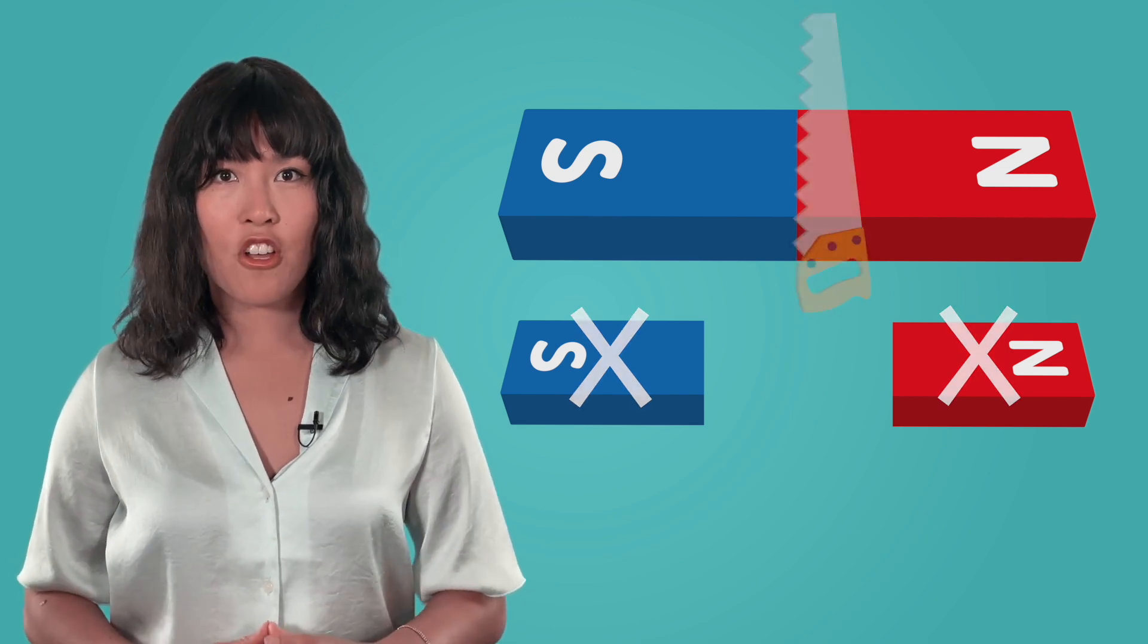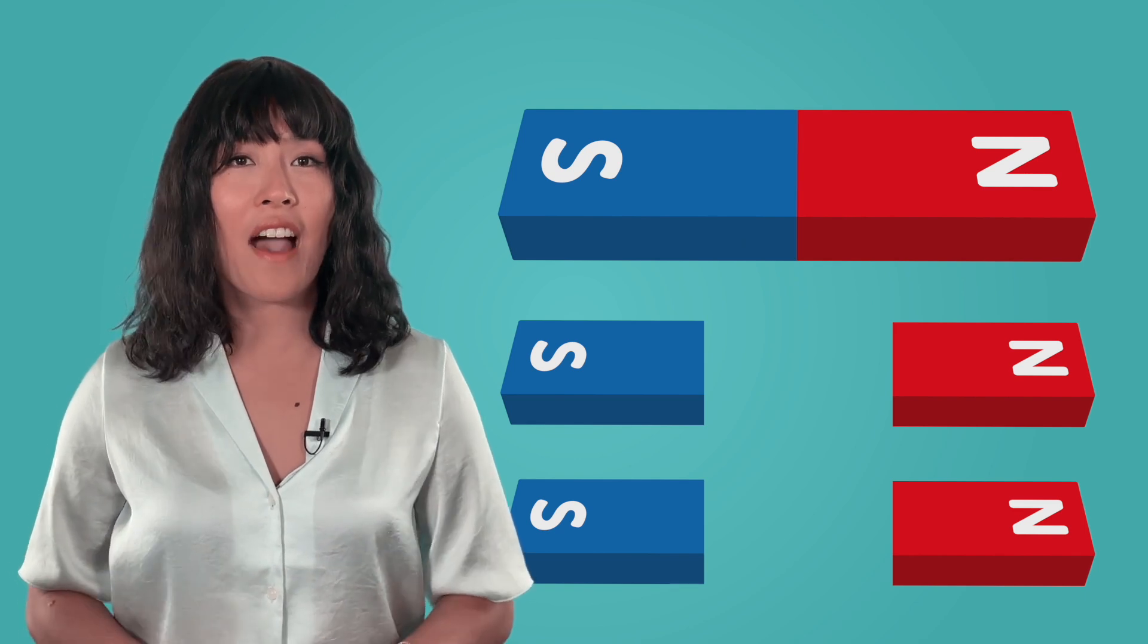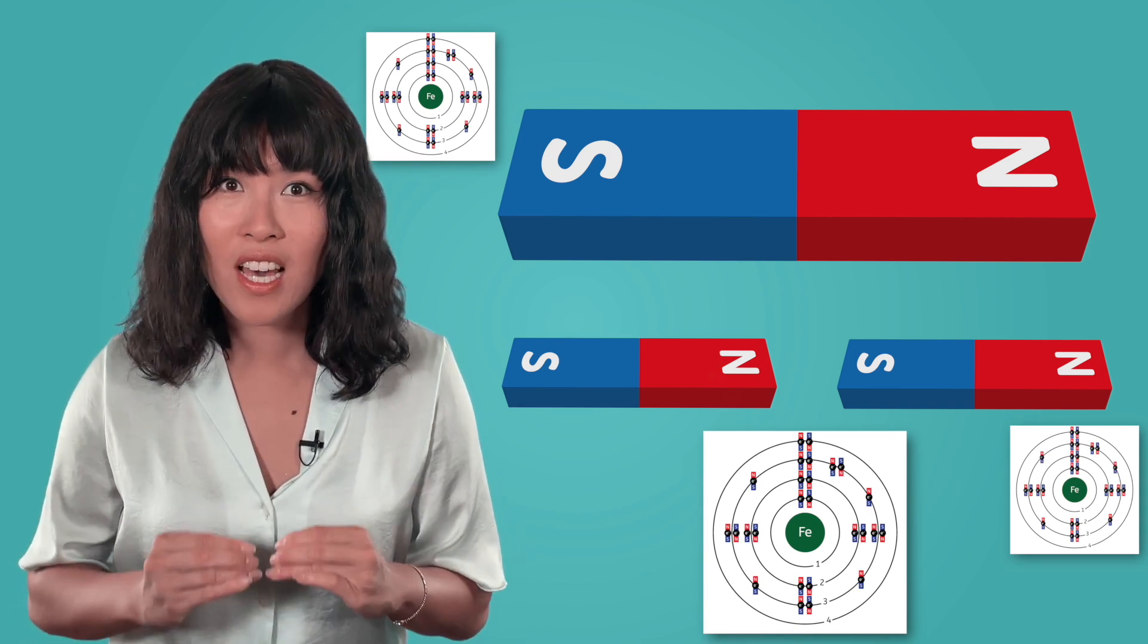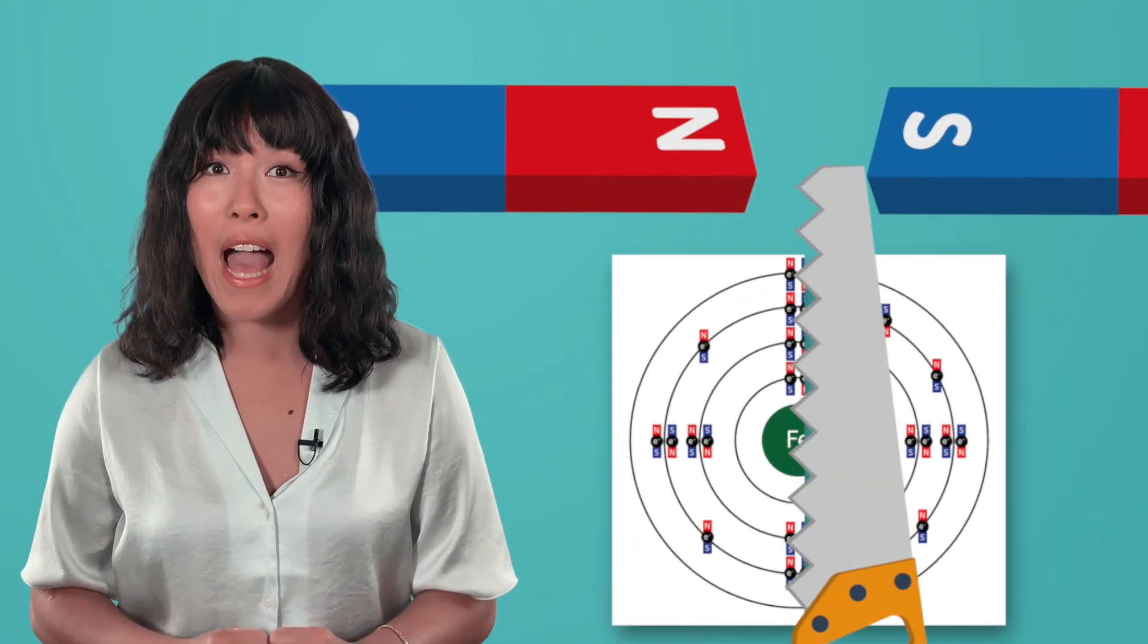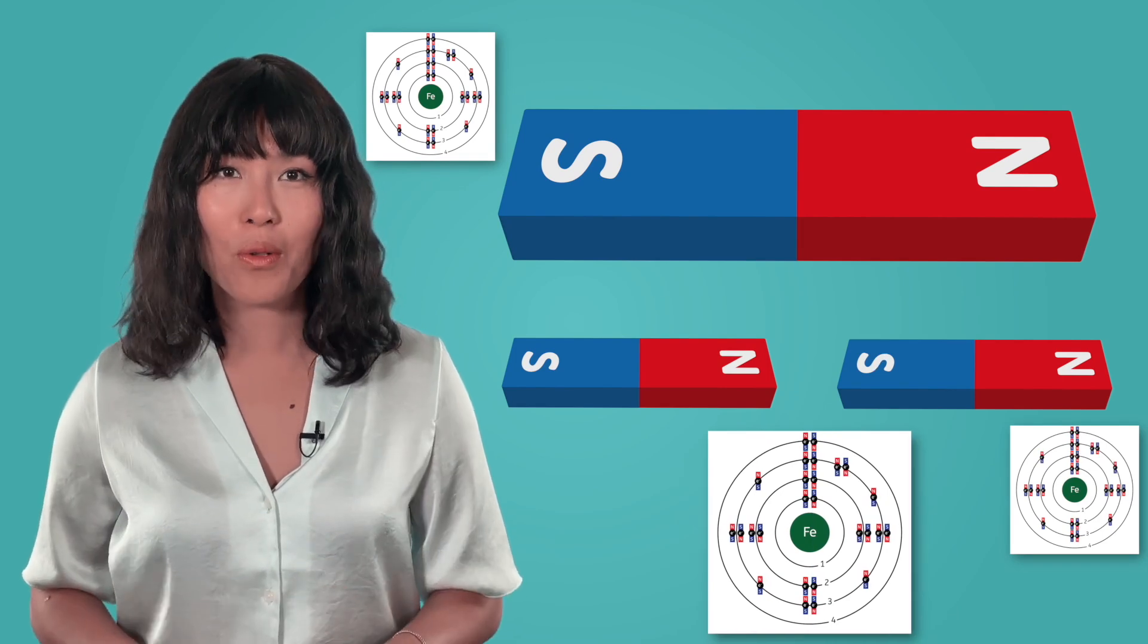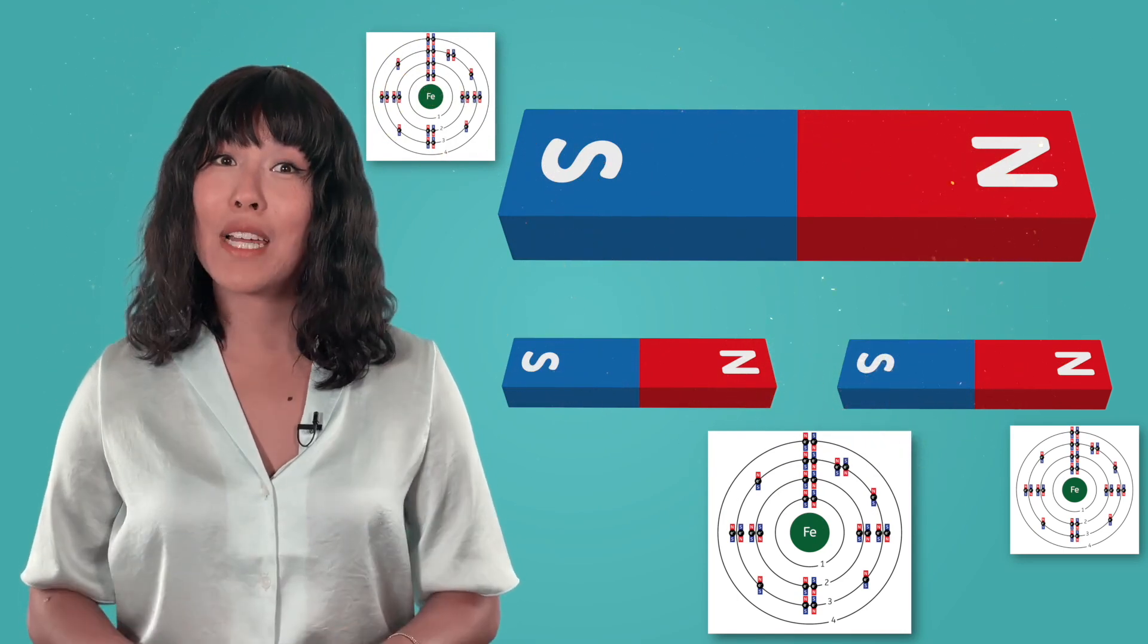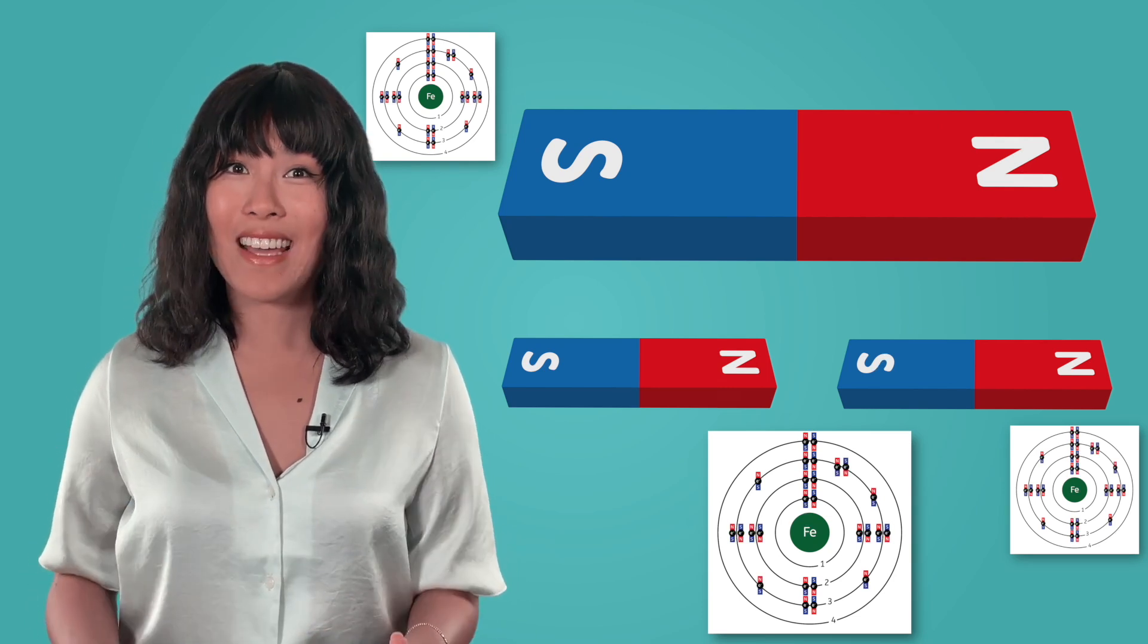For a magnetic material, no matter how many times it is broken apart, it will always still have a North and South Pole. This is because materials are magnetic all the way down to the atomic level, so unless we're actually going to break the individual atoms apart, we won't be able to avoid having both poles. Does this seem like magic still? Let's look more closely at the atomic nature of magnetic materials to understand why it's actually explainable by science.